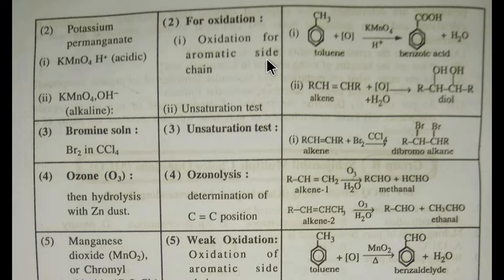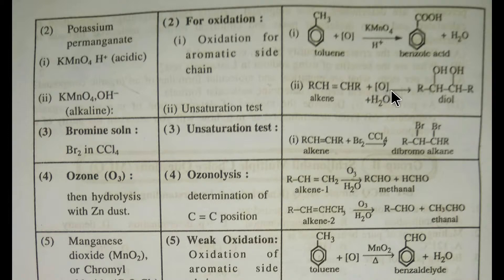Potassium permanganate in alkaline solution is used to detect unsaturation. Here is an unsaturated compound — an alkene. If we add potassium permanganate in basic medium, we will get a diol.